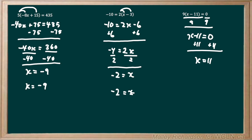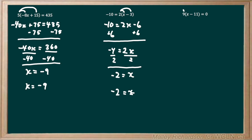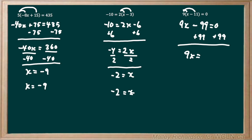Now let's do the second method. The second method involves the distribution laws, so we're going to multiply this 9 by everything inside the brackets. We have 9 times x, which is 9x, minus 9 times 11, which is negative 99, and that all equals 0. To isolate for x, we want to get rid of this negative 99 by adding 99 to both sides. We're left with 9x equals 0 plus 99, which is 99. Now to get rid of this multiplication, we divide both sides by 9, and we're left with x equals 11. In our previous method, we also got x equals 11, so both methods work.